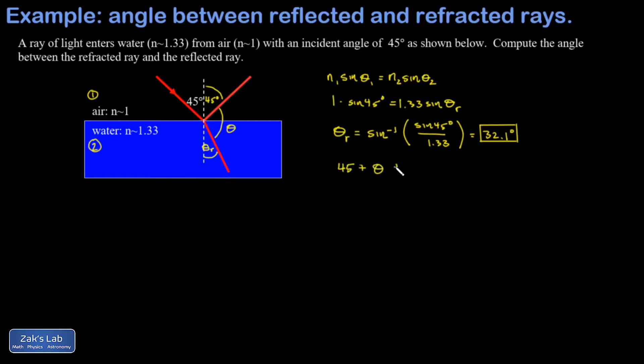...plus theta plus my refracted angle 32.1 degrees is equal to 180. To three sig figs I get 103 degrees for the angle between the reflected and refracted rays.